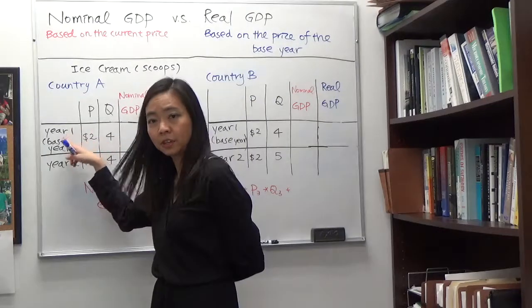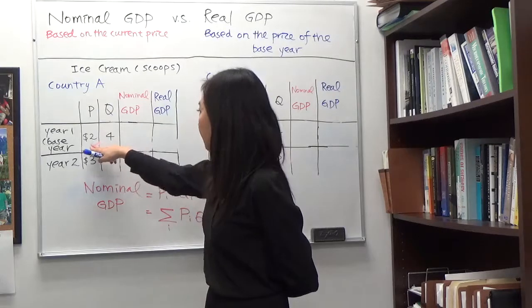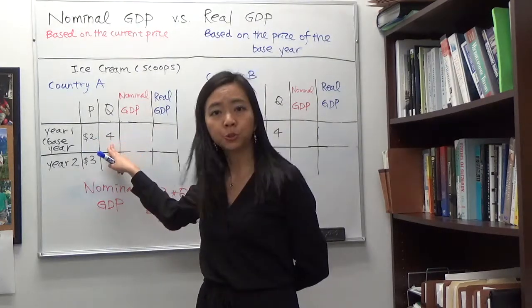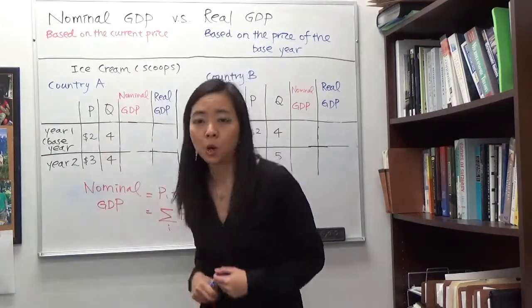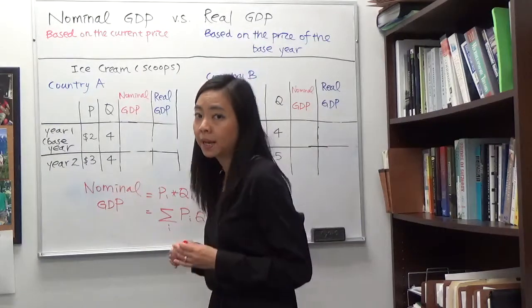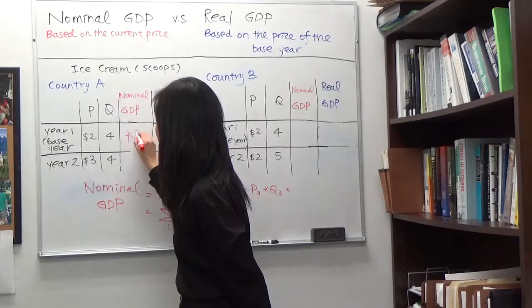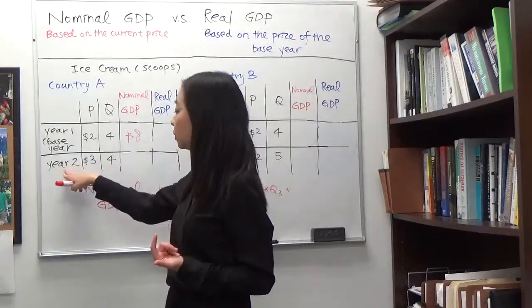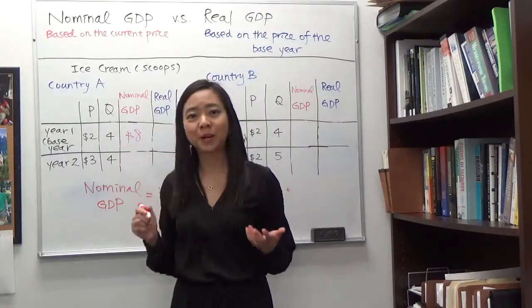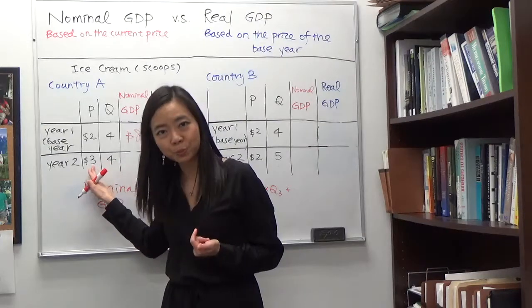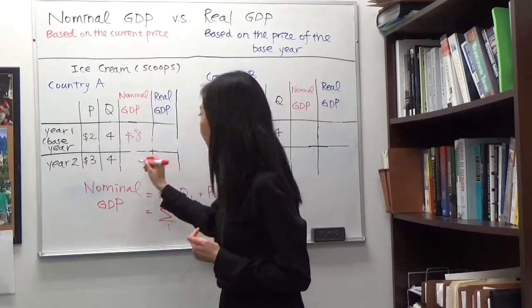In country A, we can see that there are two years, and we're going to use year one as the base year. In year one, country A produced four scoops of ice cream and the price is two dollars. We calculate nominal GDP by multiplying price and quantity: two times four gives you eight. In year two, they still produce four scoops, but the price has gone up to three dollars per scoop, so their nominal GDP is three times four, which gives you twelve.